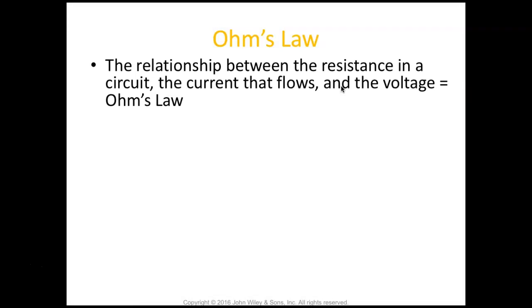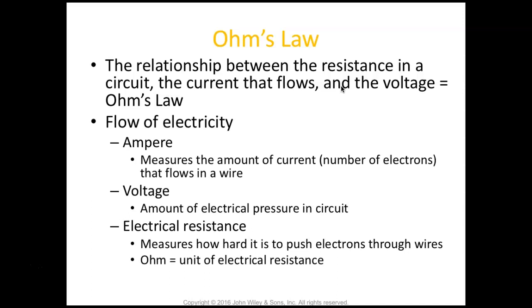Ohm's law, a scientist named Ohm, he comes up with this relationship between the resistance in a circuit, the current that flows, and the voltage, which is Ohm's law. An ampere measures the amount of current, or basically the number of electrons that flows in a wire. Voltage is the amount of electrical pressure in a circuit. And then electrical resistance measures how hard it is to push electrons through the wires. And an Ohm is how you describe electrical resistance. It's the unit of electrical resistance.